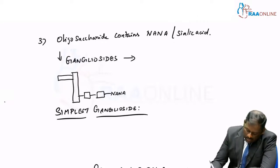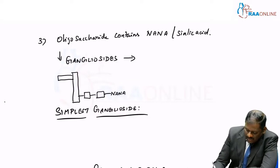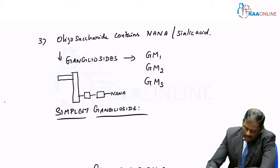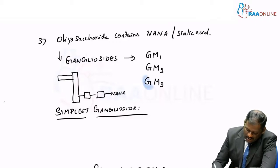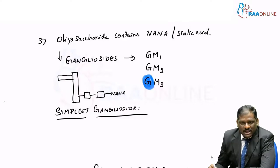These are called as gangliosides, and these gangliosides will be named as GM1, GM2, GM3, and so on. What is the meaning for this G? The G stands for ganglioside.